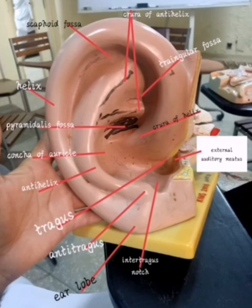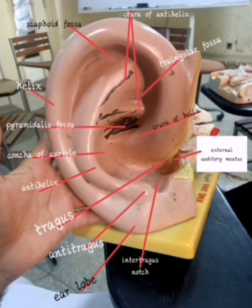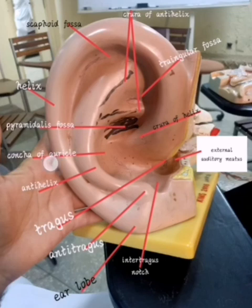Now we are left with some fossas. In between the two crura of the anti-helix, you have a triangular fossa — it has a triangular shape, hence it is known as the triangular fossa. In between the crus of the helix and anti-helix, you have another fossa of pyramidal shape, known as the pyramidal fossa. Finally, just in front of the anti-helix, there is a central depression known as the concha of the auricle.